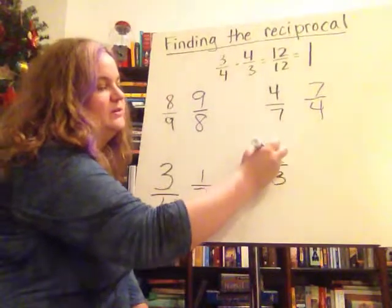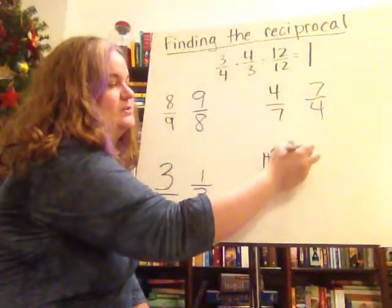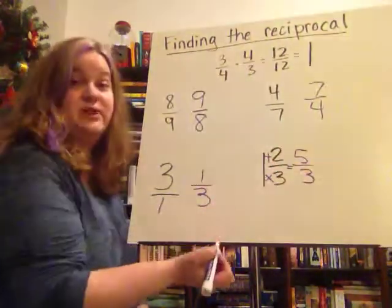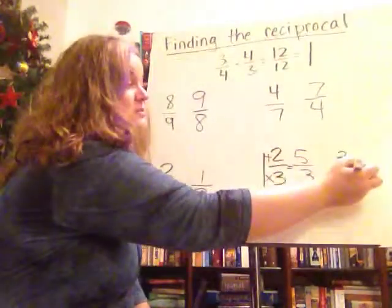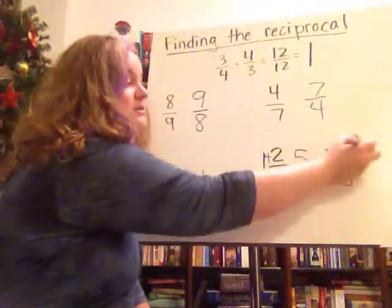If you have something like a mixed number, convert it to a fraction greater than one first. And then to find the reciprocal, you just flip it over. And so the reciprocal would be three-fifths.